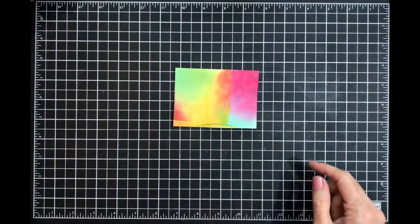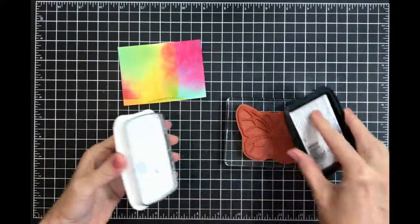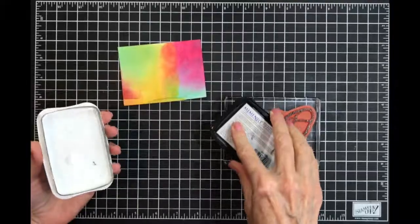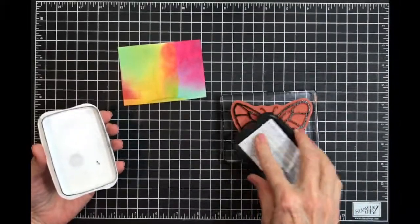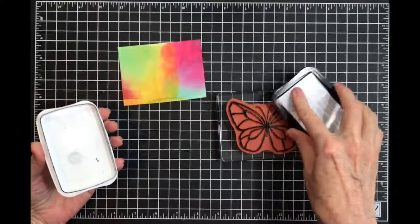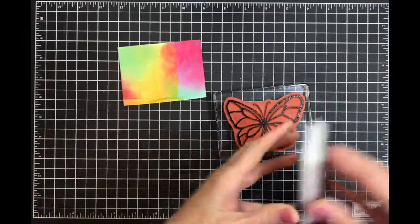So now I'm going to take my butterfly and my Memento black ink and I'm going to ink up my butterfly. I know you're thinking this does not take 10 minutes. It really only took me a few minutes to clean up and we're almost done.